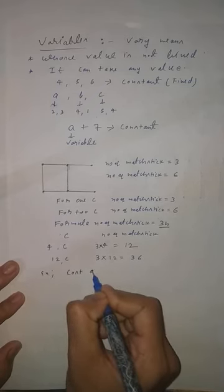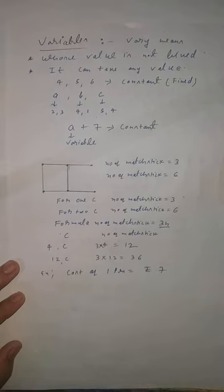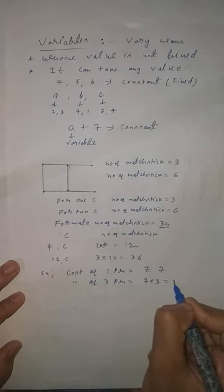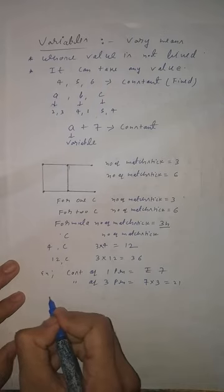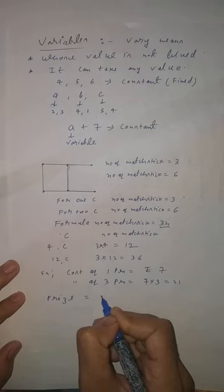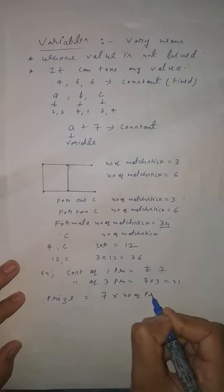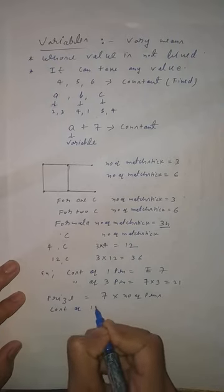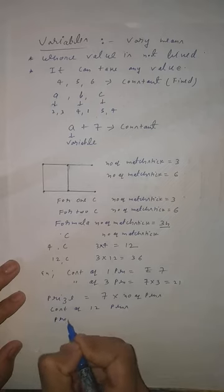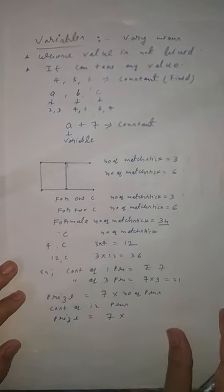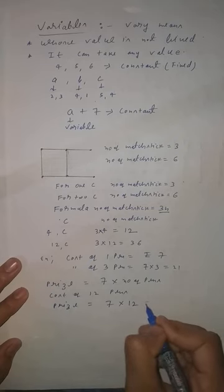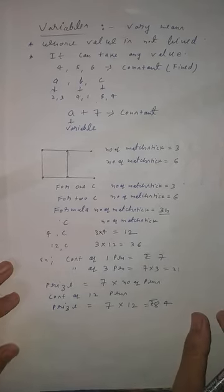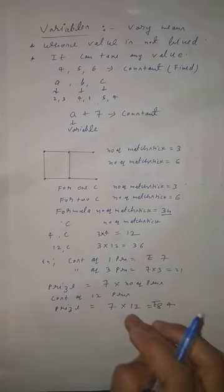Similarly, cost of one pen equals seven rupees, so cost of three pens equals seven multiplied by three, which is twenty-one rupees. We can write the formula: price equals seven multiplied by number of pens. For twelve pens: seven multiplied by twelve equals eighty-four rupees. This is how we use algebraic expressions in patterns.